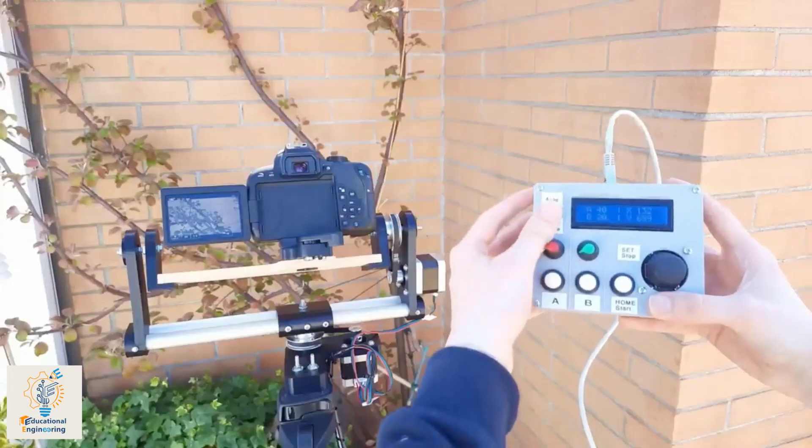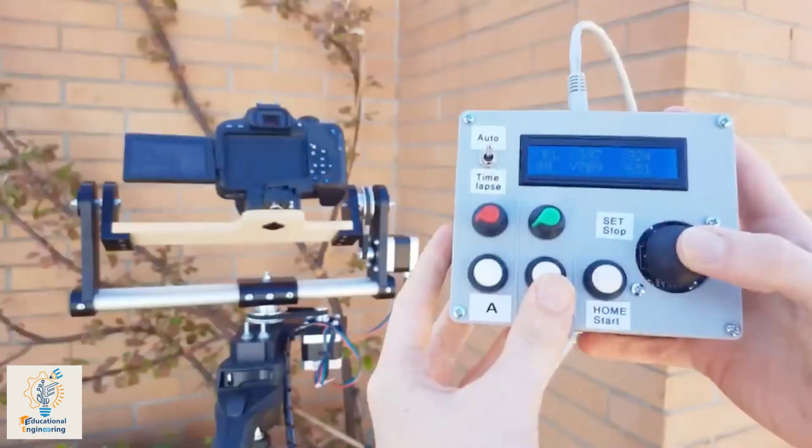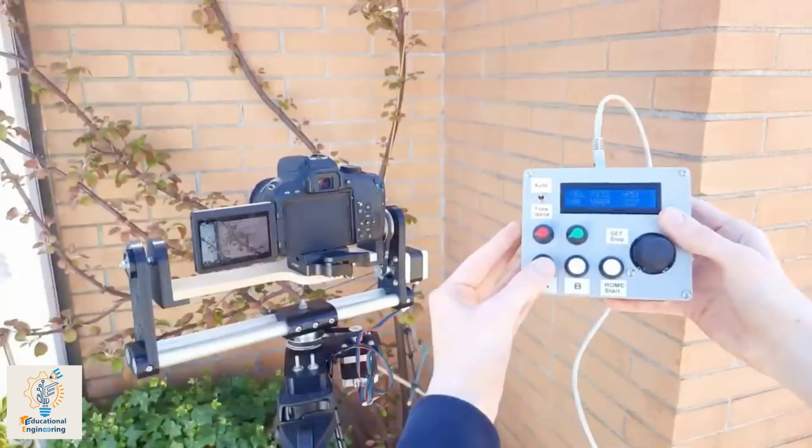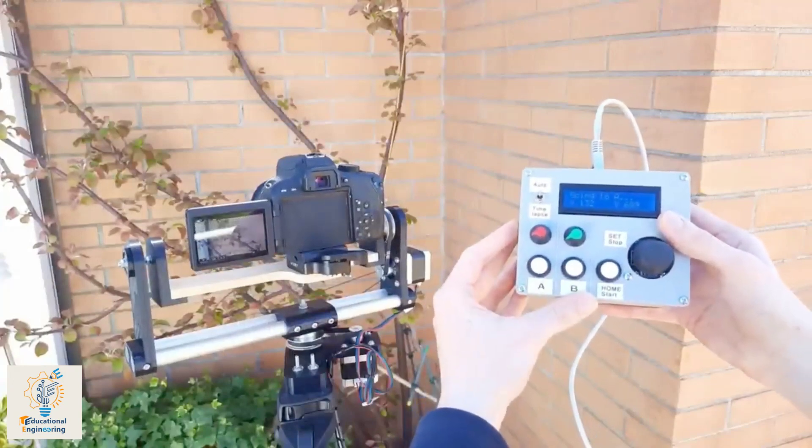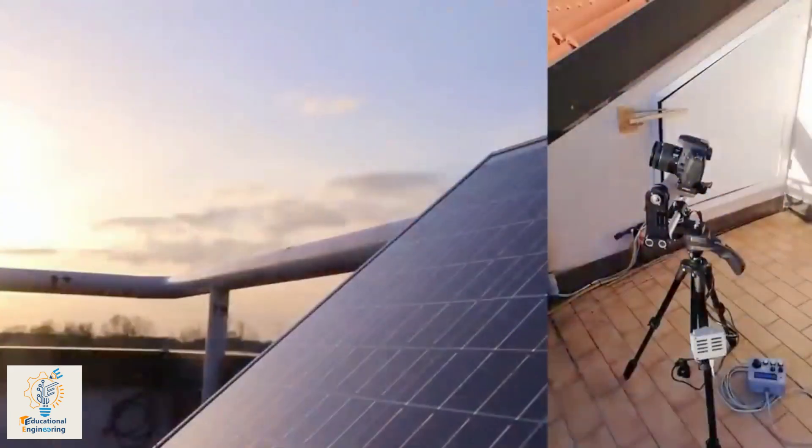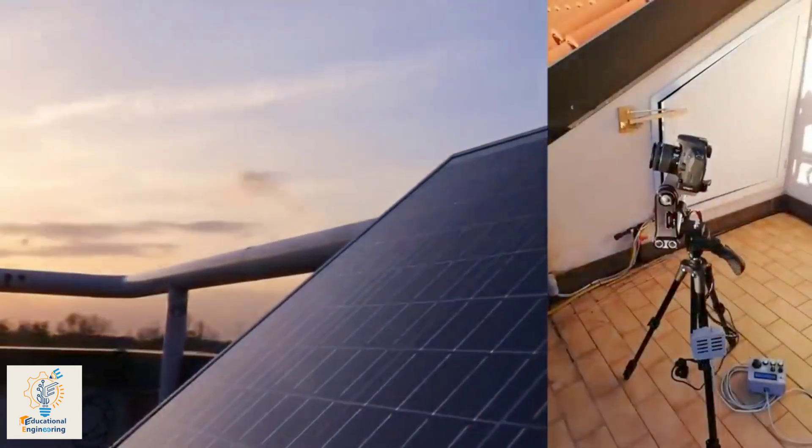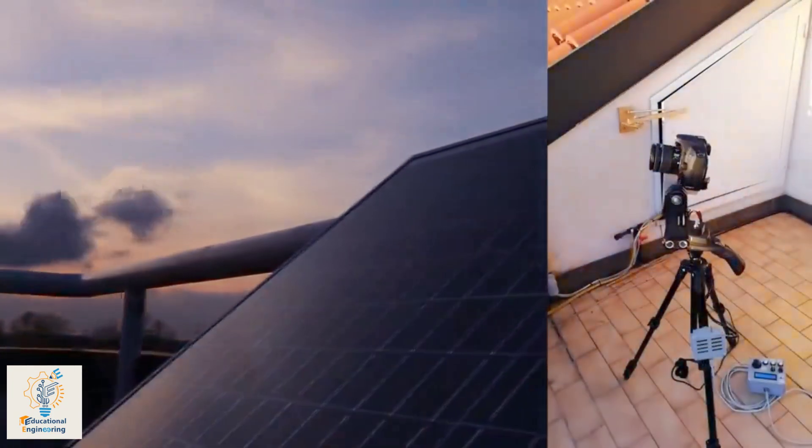The controller also has an auto mode where you could set two positions and the camera will move smoothly between them. Another great feature is the time-lapse mode, in which the camera moves a little bit in each shot.